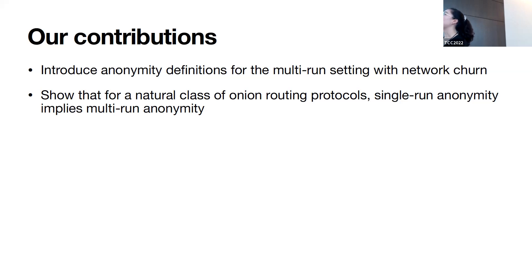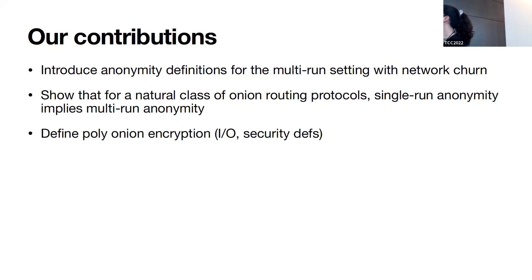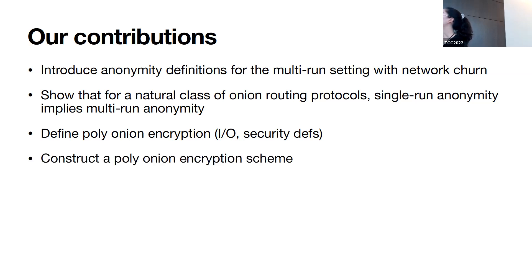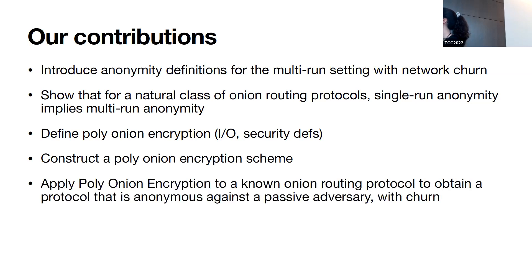This doesn't deal with network churn yet, so we defined a new kind of onion encryption called poly onion encryption that's more robust when Ivan is offline. Part of defining this was including security definitions capturing the notion of mixing. We then construct a poly onion encryption scheme satisfying our security definitions, and finally apply it to a known onion routing protocol to obtain a protocol that is anonymous against a passive adversary in the multi-run setting with churn.